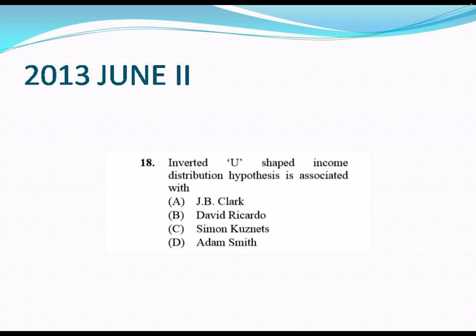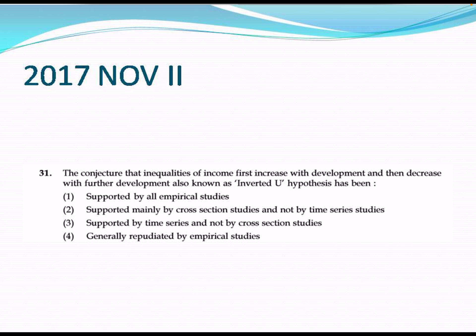Now let's look at past exam questions. A 2013 June Paper 2 question asked which economist the inverted U-shape income distribution hypothesis is associated with — the answer is Simon Kuznets, option C. A 2017 November Paper 2 question stated: the conjecture that inequality of income first increases with development and then decreases — the inverted U-shape — has been supported mainly by cross-sectional studies and not by time series studies.